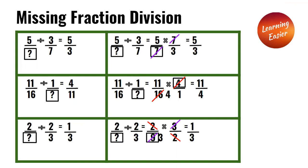Missing Fraction Division. 5 over something divided by 3 over 7 is equal to 5 over 3. Applying KCF: 5 over something times 7 over 3, which equals 5 over 3. We have to cancel out the 7, so the missing number has to be 7, since they cancel out to make 1. So the answer is 5 over 3.